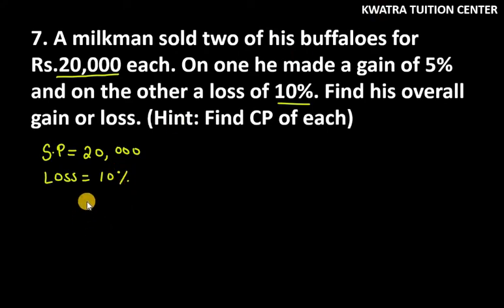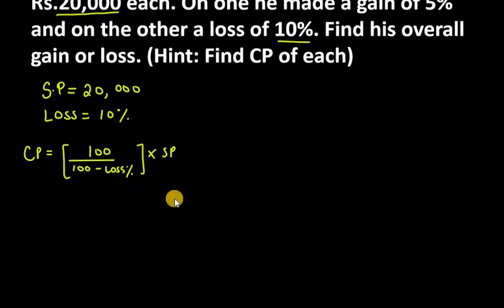We will find cost price. The cost price formula is 100 divided by (100 minus loss percent) multiplied by SP. So 100 over (100 minus loss percent), so 100 over (100 minus 10).